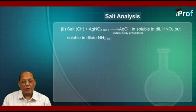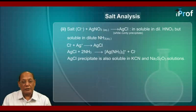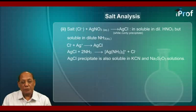The second confirmatory test is: take the salt containing chloride ion and add aqueous silver nitrate. We get a white curdy precipitate of silver chloride, which is insoluble in dilute HNO3 but soluble in dilute aqueous ammonia. The reactions are: Cl⁻ + Ag⁺ gives AgCl, and then AgCl + 2NH3 gives a soluble cationic complex [Ag(NH3)2]⁺ plus chloride ion. Silver chloride precipitate is also soluble in potassium cyanide and Na2S2O3 solutions.